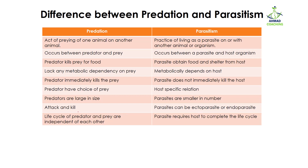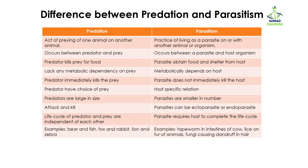The life cycles of predator and prey are independent of each other — the predator can live its own life and the prey can live its own life. In parasitism, however, the parasites require a host to complete their life cycle. If the host is not there, the parasite cannot complete its life cycle, so they are totally dependent on their host.